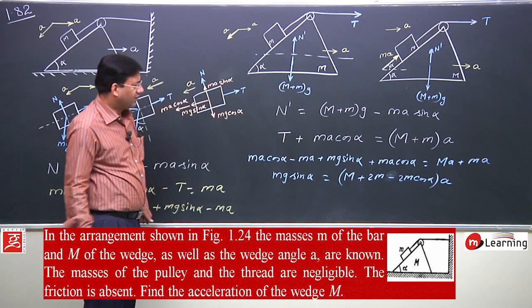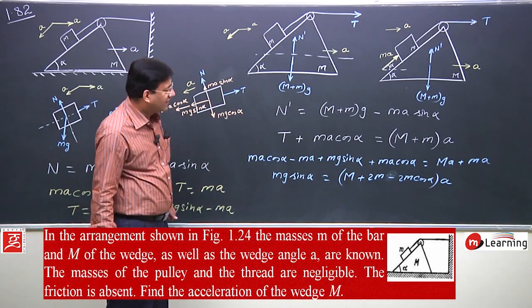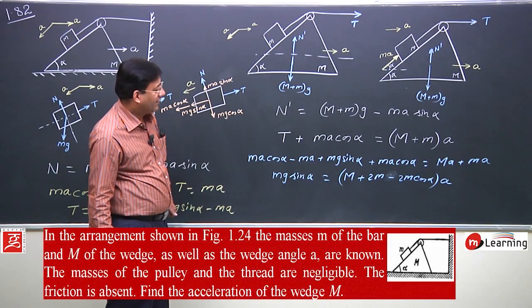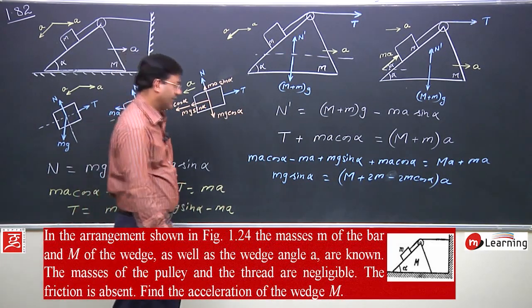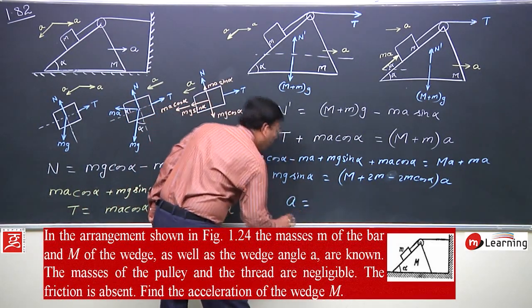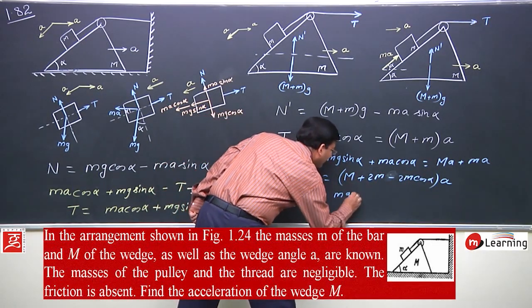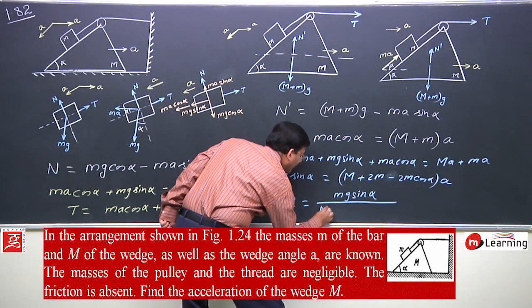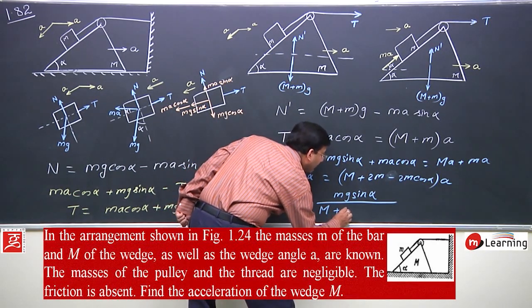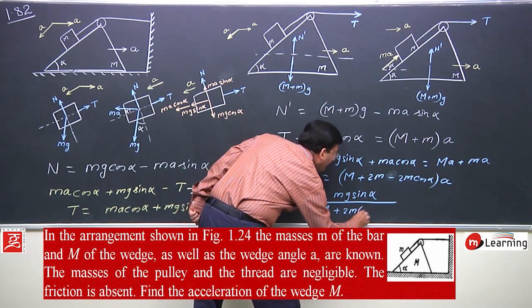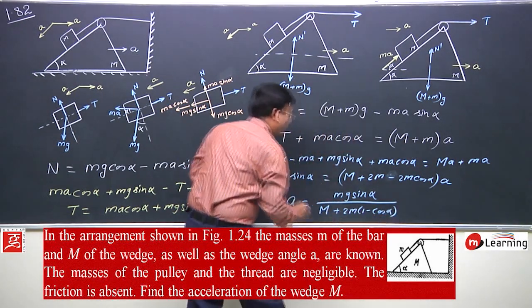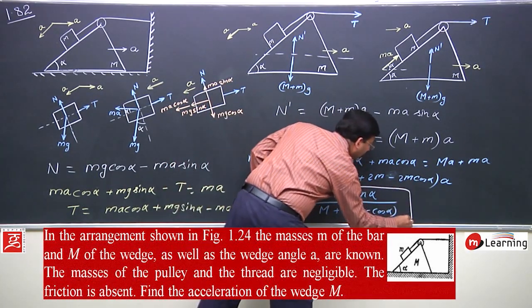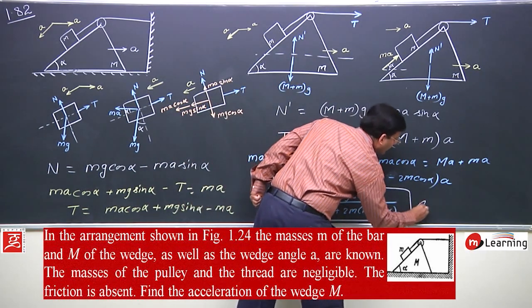So the acceleration of the wedge is: A = mg sin alpha divided by (M + 2m)(1 − cos alpha). And this is the answer to this problem.